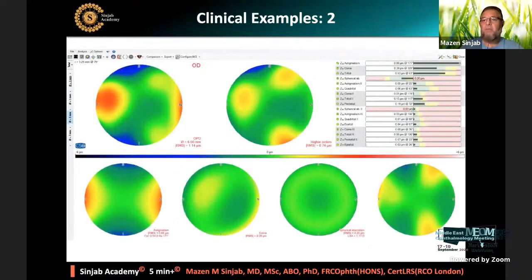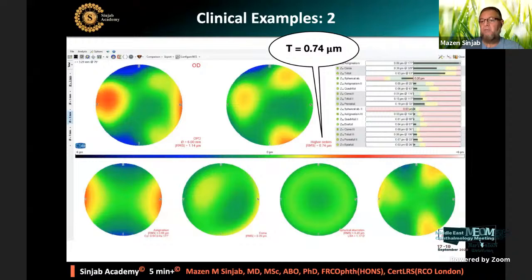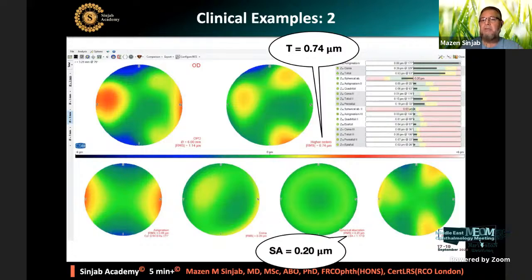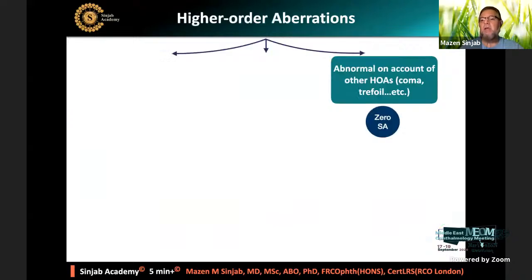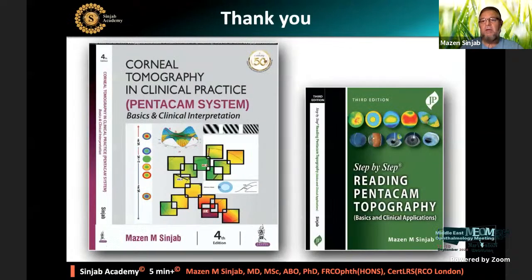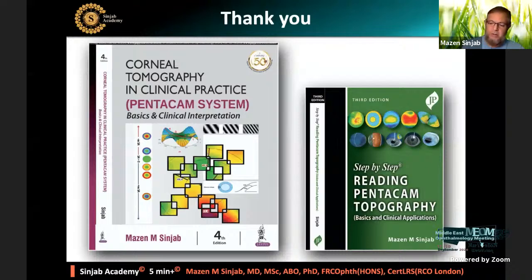Clinical example two by Sirius: the total RMS is very high at 0.74, while the spherical aberration is 0.20. The high-order aberrations are on account of other high-order aberrations, not on the account of spherical aberration. So in this case, we must implant zero spherical aberration to avoid inducing more aberrations. Thank you very much. I'd like to announce my two books: the fourth edition of Corneal Tomography in Clinical Practice and the third edition of Step-by-Step Reading Pentacam Tomography, which include this algorithm in detail.